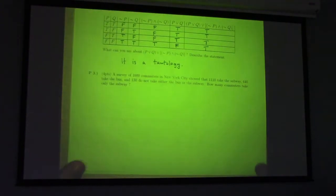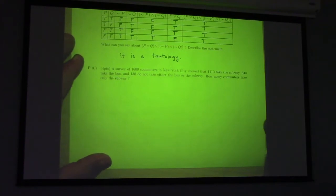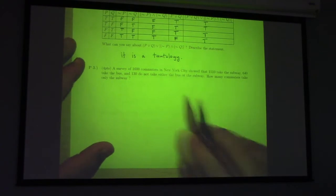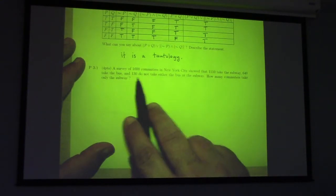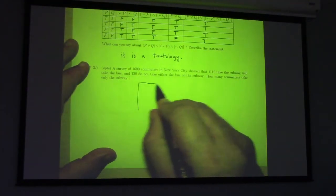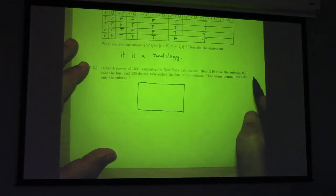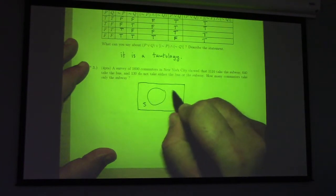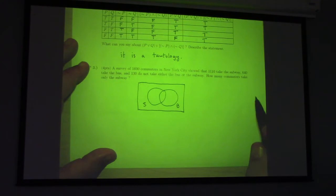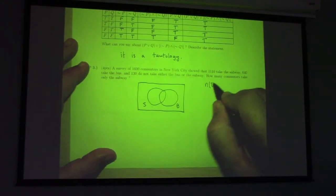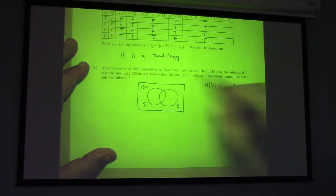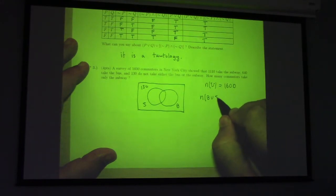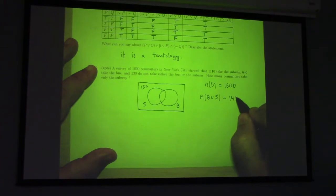For problem three, how do we solve this problem here? You have 1,600 commuters in New York City. You've got 1110 take the subway. 640 take the bus. 130 don't take either the bus or the subway, right? So, if we draw a picture of this, I find it helpful to draw a picture. Let's say this is the subway. This one's the bus, right? The universe, the number in the universe is 1,600, right? And you've got 130 that are not subway or bus. They're out here, right?